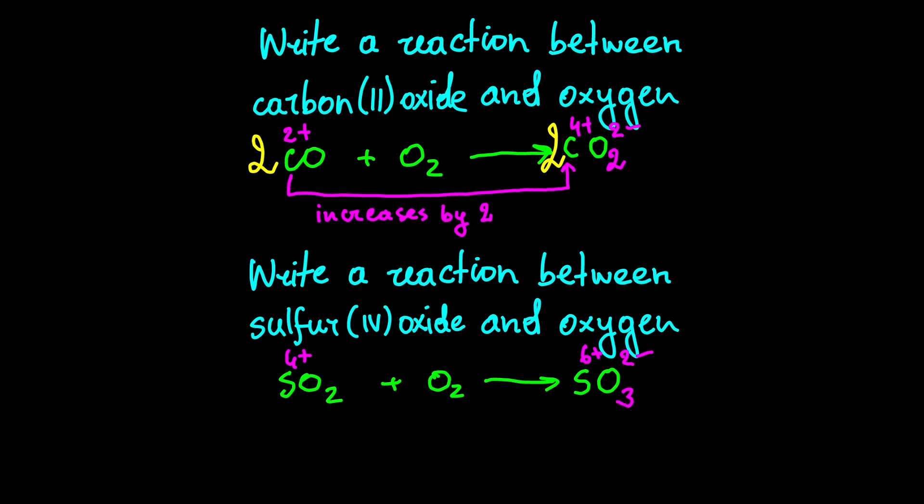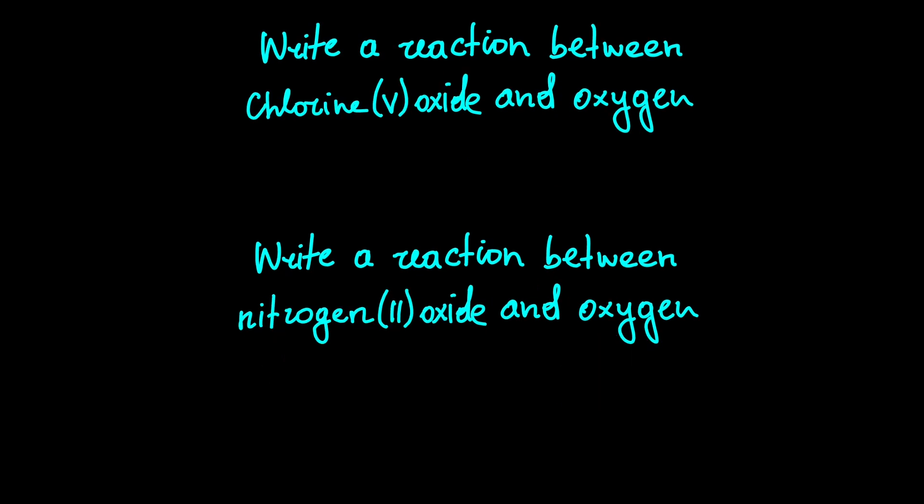Okay, now it's time for two last examples. In the first one, Cl2O5 reacts with oxygen. Chlorine charge is five plus, so after the reaction it becomes seven plus. Oxygen is two minus like always, so the formula is Cl2O7. Lastly, we don't need to balance this reaction because we have an equal amount of atoms on both sides.